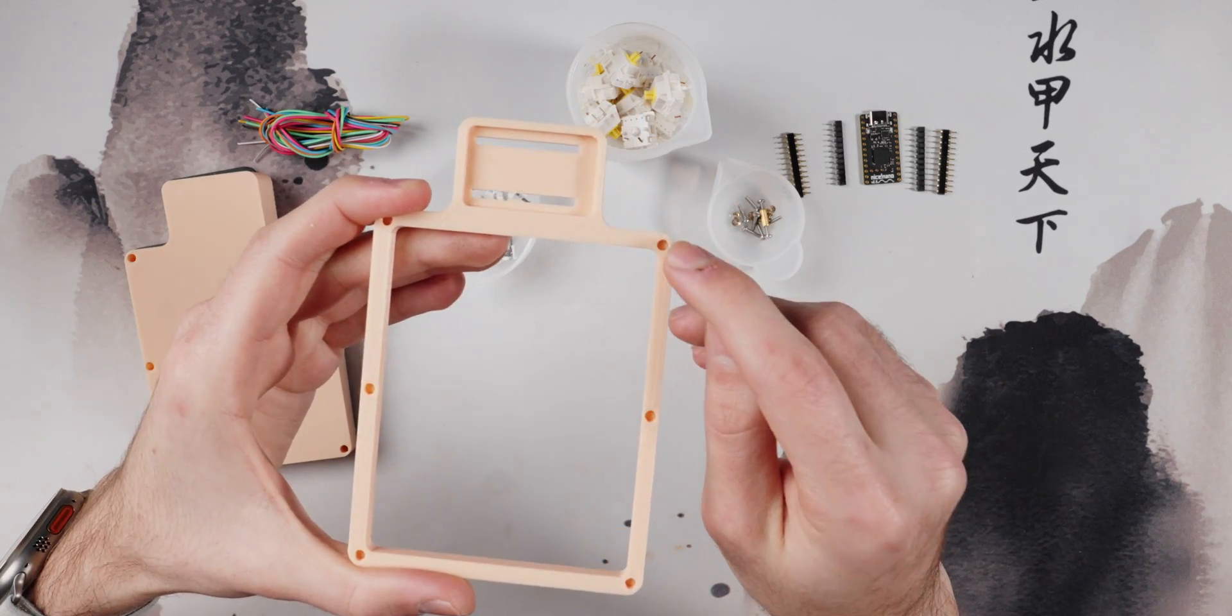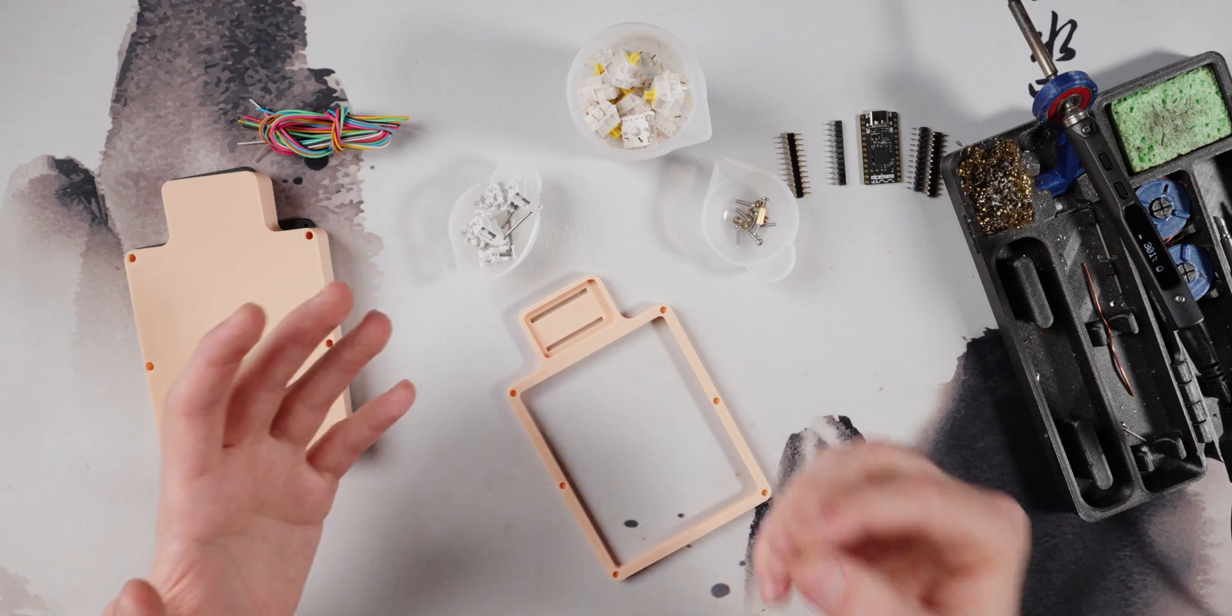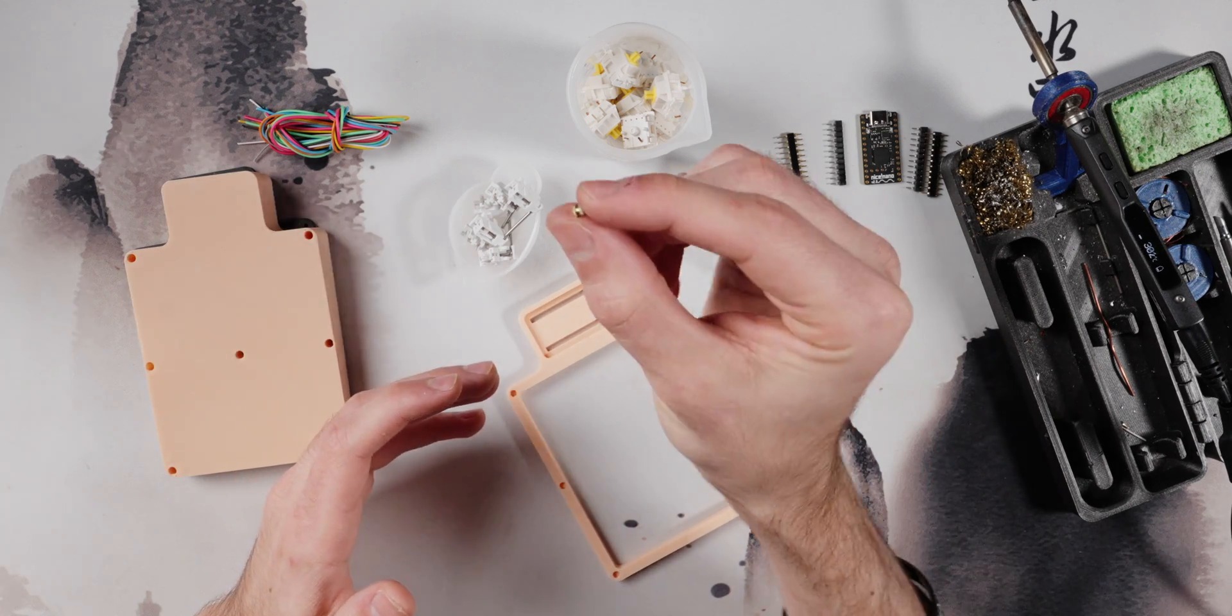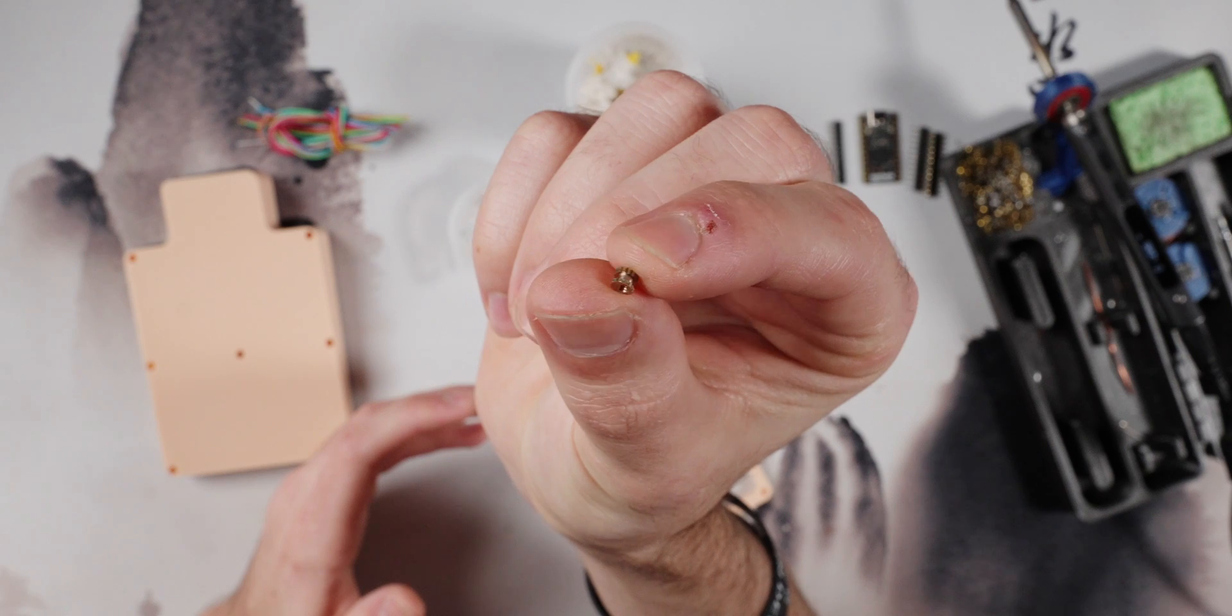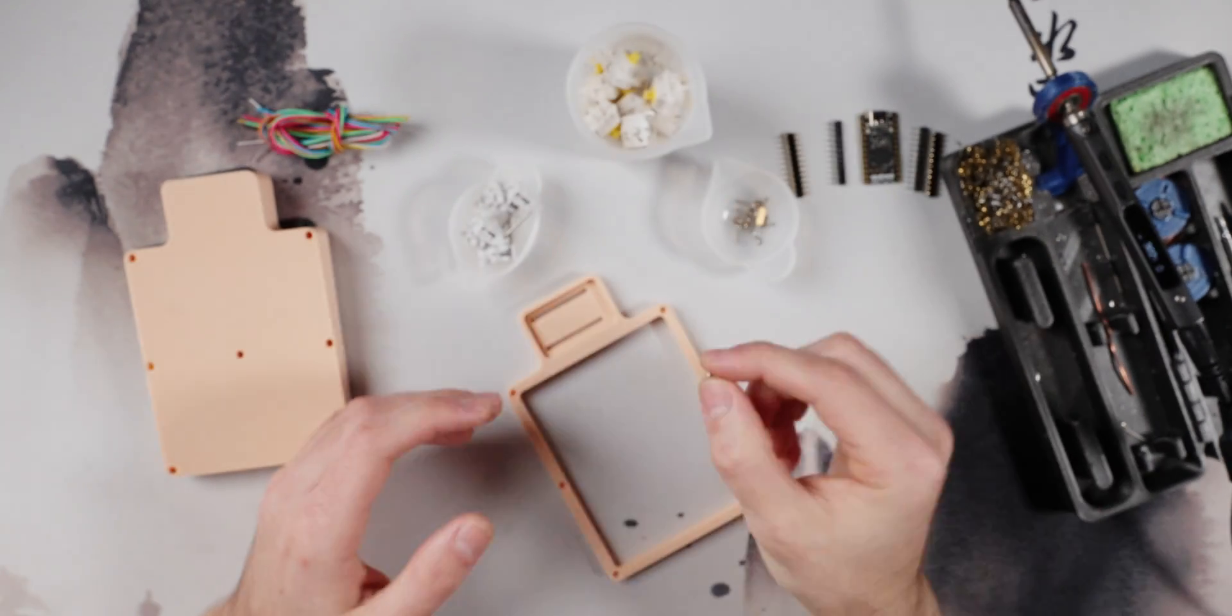We'll be using heat set inserts to actually attach everything. So heat set inserts are very simple - it's just a little tiny thing like this with some knurling on the sides that you can then take and put on the hole you made in your 3D file.